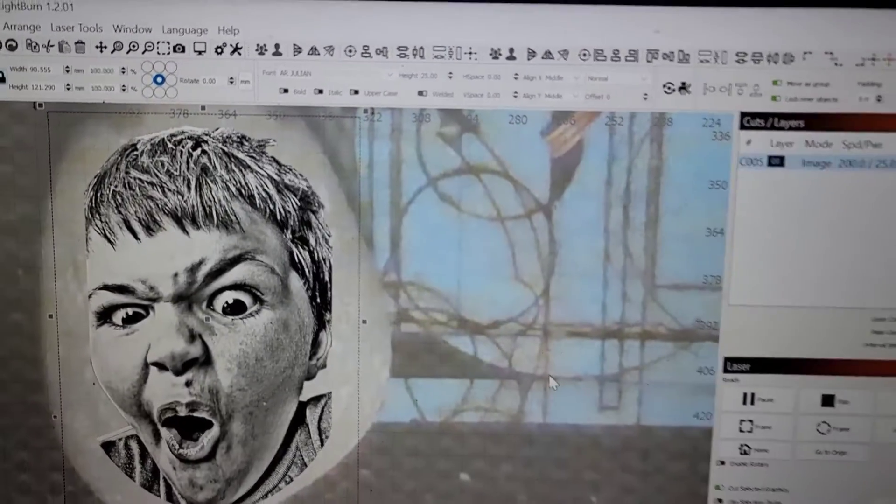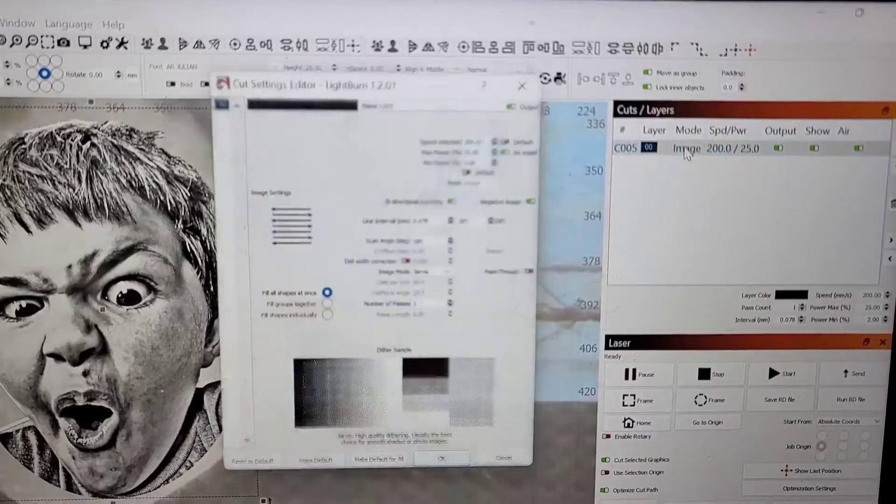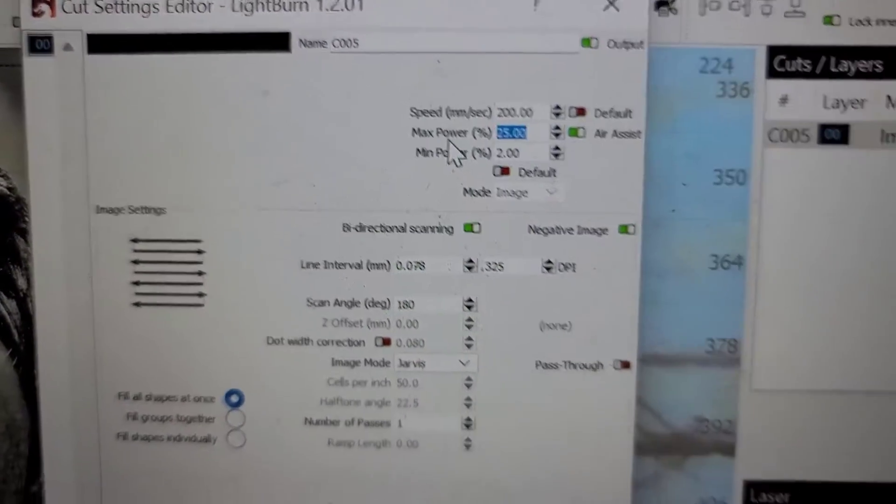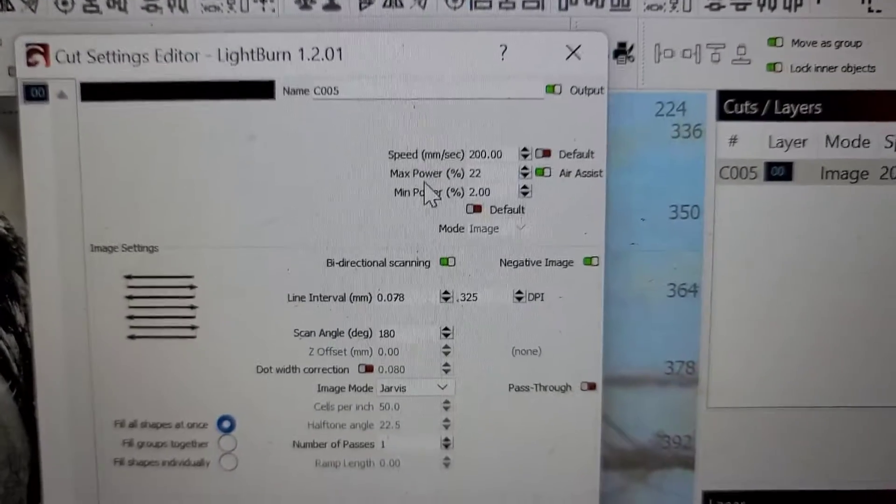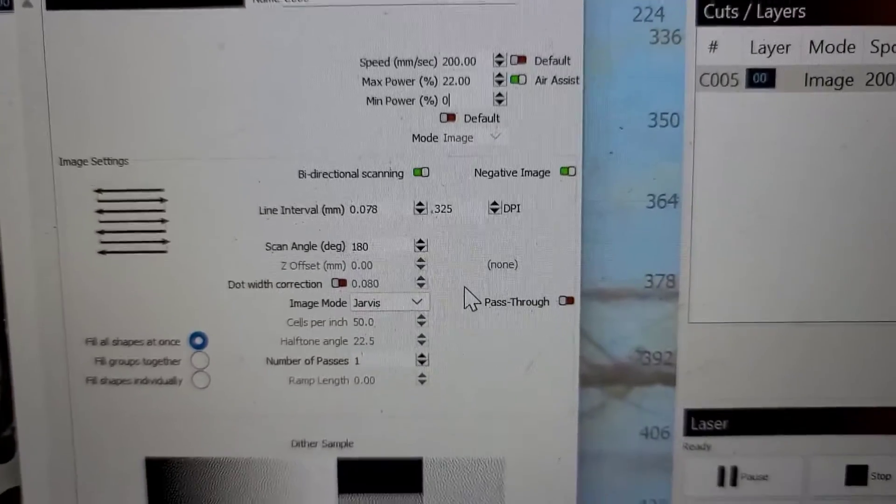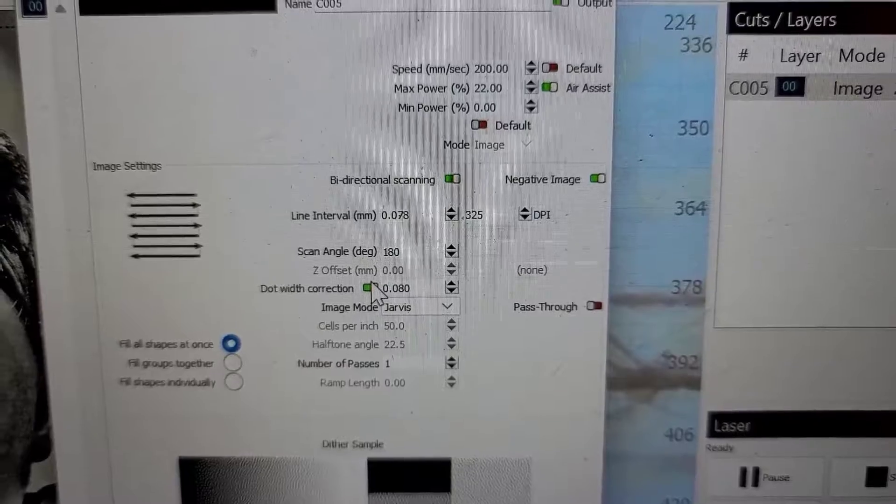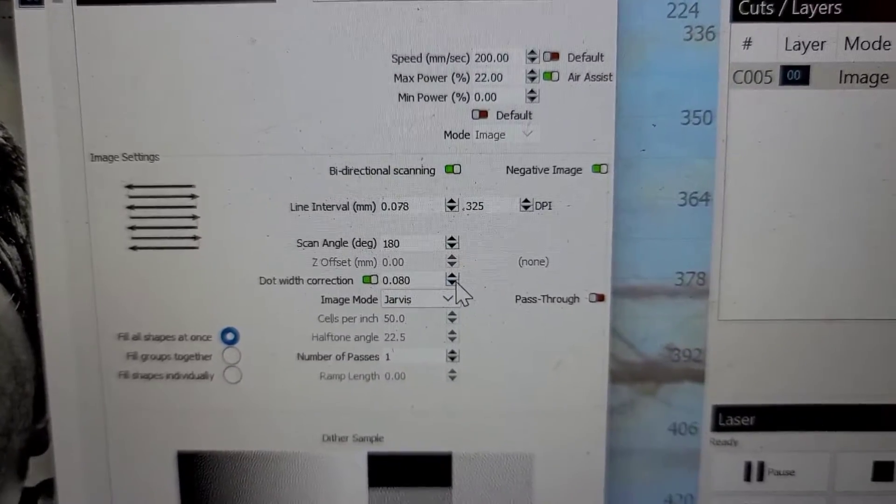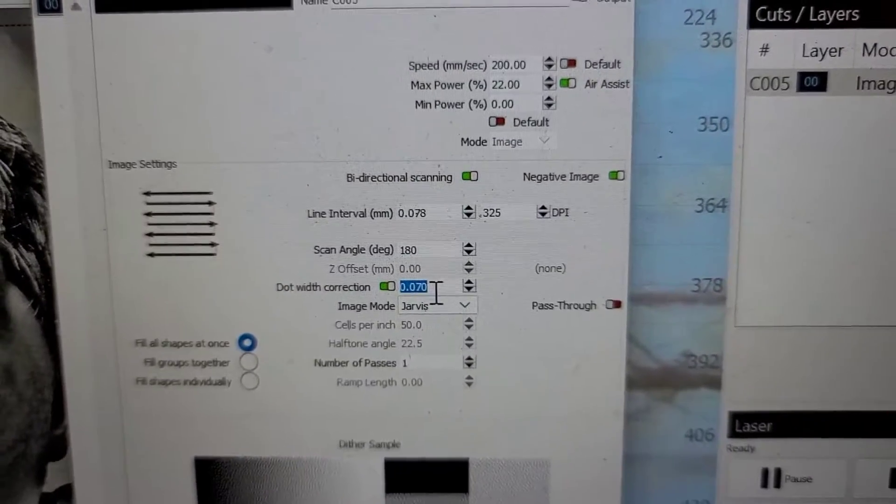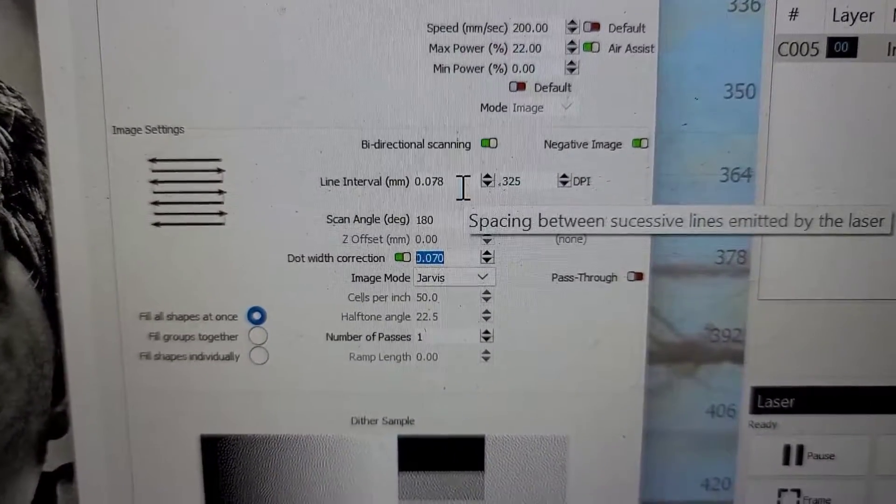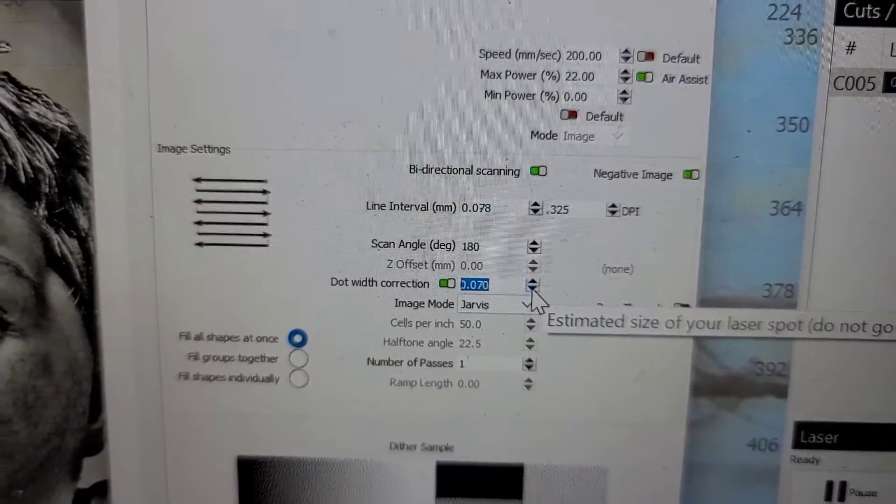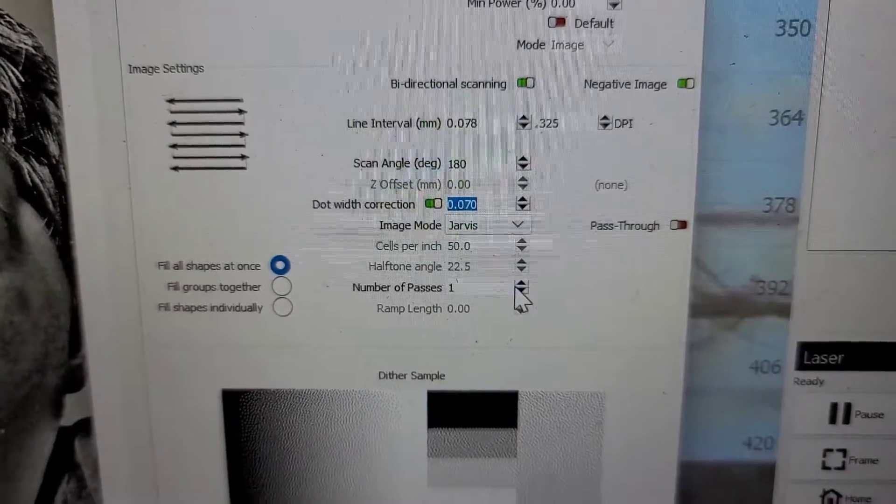And now this is what should be outputting. So you can see that's what we're going for. It doesn't mean we'll get it, that's definitely what we're going for. Now over here we're going to change a couple of our settings. I'm going to change my maximum power down to 22. Minimum power is going to be zero, I just leave it there. I'm going to do a dot width correction on this and right now we're at 0.78. See my line interval? You want to make sure that your dot width correction isn't larger than your line interval, it will look really bad. You don't want to go too small either, it will look bad.